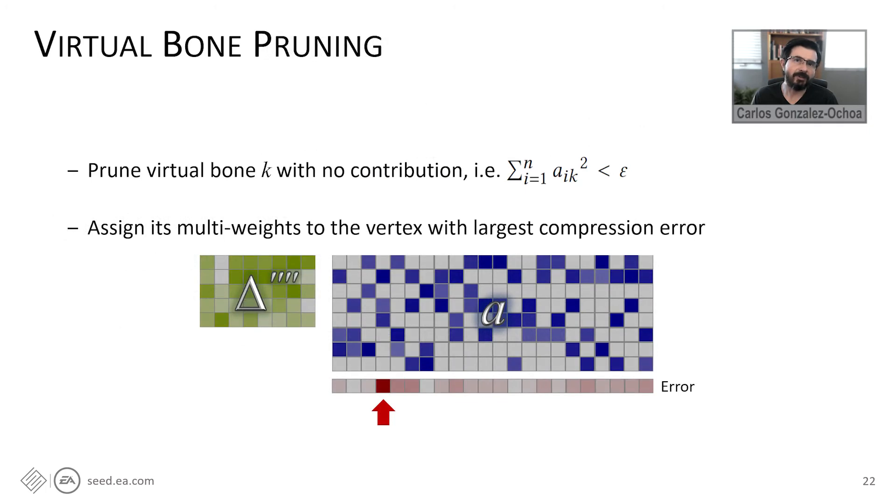If a virtual bond needs to be re-initialized or it has an insignificant contribution, in this case, we look for the vertex with the largest compression error and assign its original DDM weights for this virtual bond and resolve the scalar weights of the second layer.